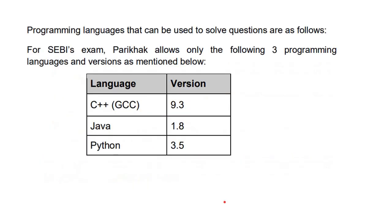What languages are allowed in SEBI IT? These are C++, Java, and Python. You can write code in any language, and there is no need to fix the language at the very start — you can change the language as per your own convenience. The particular versions of the compilers shown are from the previous year, so there will definitely be a change this year. The versions are not very updated, and you don't need very recent knowledge of all the libraries incorporated in that compiler.